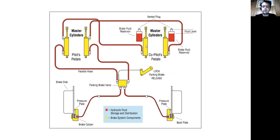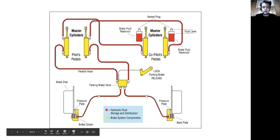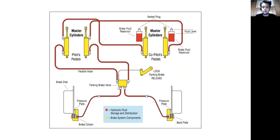The master cylinder is pushed by the brake pedal, and then that force gets applied through the brake line all the way down to the brake caliper. The brake caliper clamps onto the brake discs on each wheel. In the middle here is a parking brake valve, and there's a parking brake lever in the cockpit.